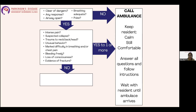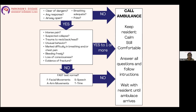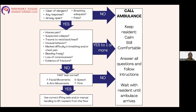If none of those warning signs are present, perform the FAST test: check if facial movements are normal, if arm movements are normal, whether speech is normal, and if the person is oriented to time, place, and person. If no to any of these, call the ambulance immediately. If yes, begin helping the person get up from the floor using one of the techniques shown.